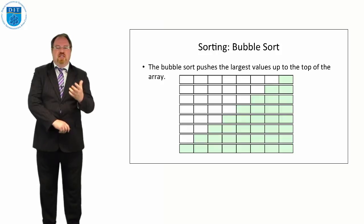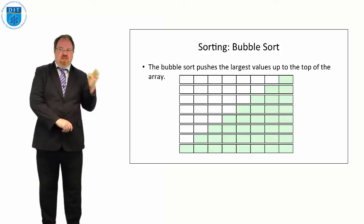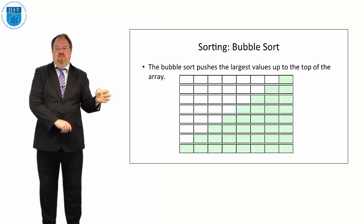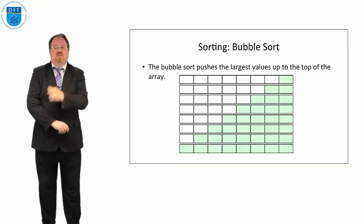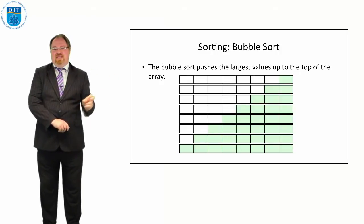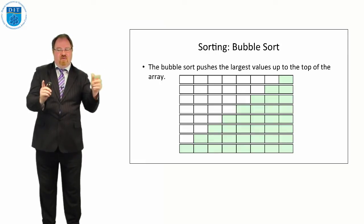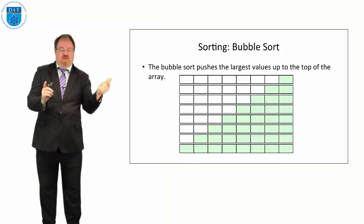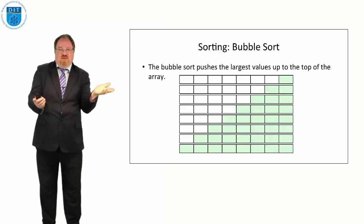If we recognize that, then we shouldn't need in the inner loop to go from the start to the end of the array each time. What we should do is the first time go from the start to the end, next time go from the start to the end minus one, next time go to the start to the end minus two, n minus three, n minus four. Because no point going if we've done four passes already, the last four values are already in order, so there's no point checking if the last four need to be sorted because we already know they're sorted.